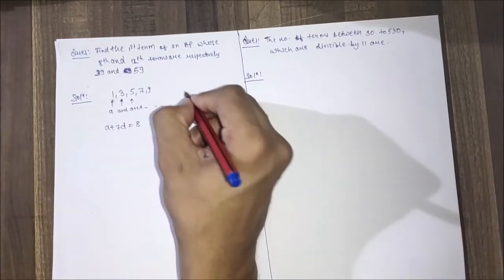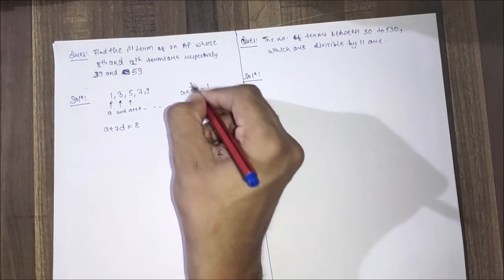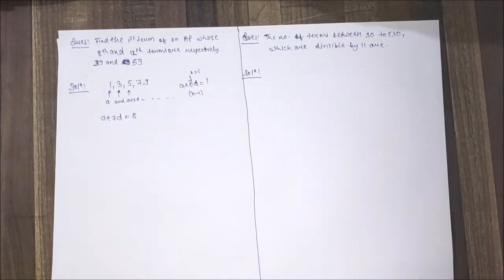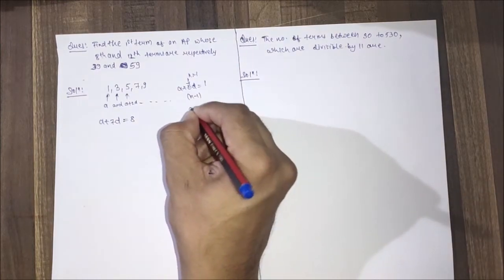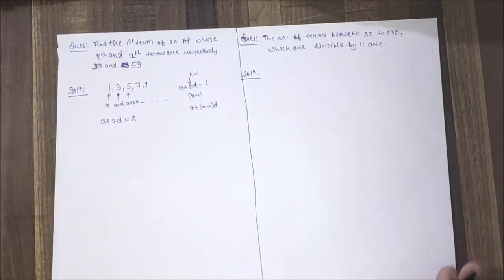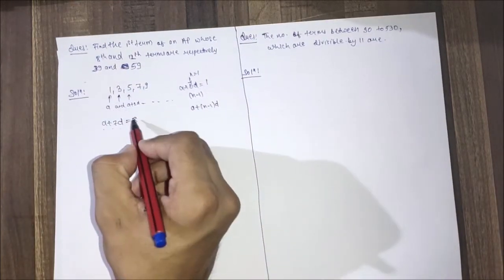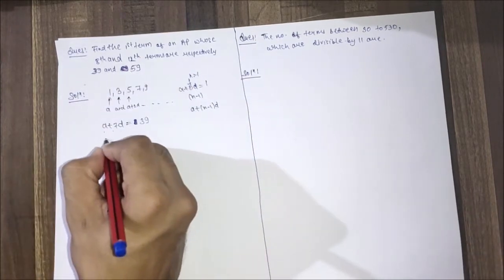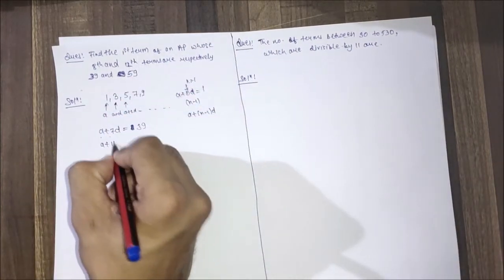Here a+0d is 1, where n equals 1, but we put n-1 in the formula. To find the nth term, we take a+(n-1)d. So 8th term is a+7d, which equals 39. And 12th term will be equal to a+11d, that is equal to 59.